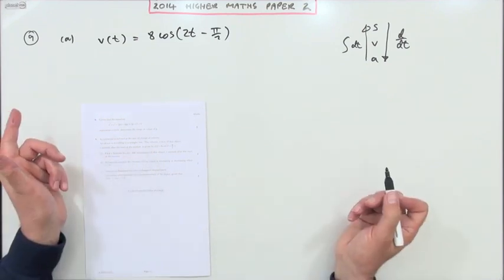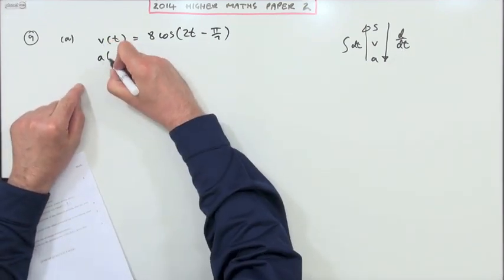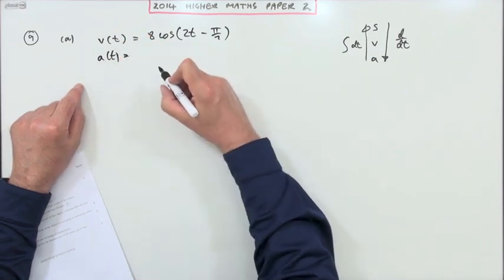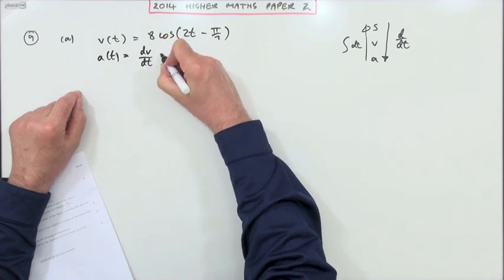Well, differentiate then. Acceleration is the rate of change of velocity. So you could write v'(t) or dv/dt, whichever you wished.